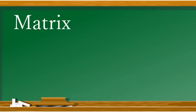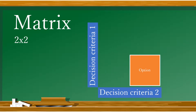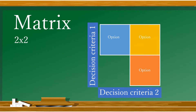Let's start by illustrating the most basic elements of a 2x2 matrix. On one axis, you will put decision criteria 1; on the other, decision criteria 2. From here, we can form a grid with four options that account for various degrees of each criteria.